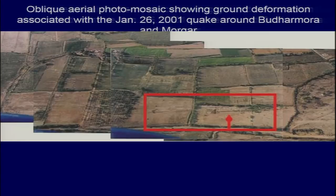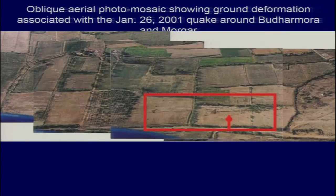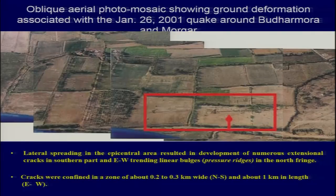We did an aerial survey and found very prominent east-west aligned ridge lines, very small ridge lines. It was difficult to differentiate between agricultural field boundaries and recently formed ridge lines because of the 2001 Bhuj earthquake. We flew very low and took very close aerial photographs to understand this. Looking towards south from the aircraft, what we found was that the southern part shows extension and the northern part, at the toe of the slope break, shows deformation.